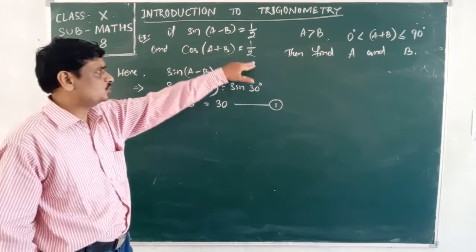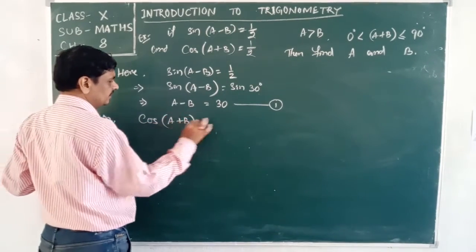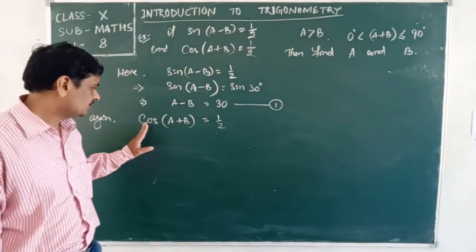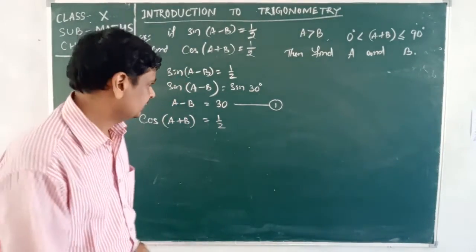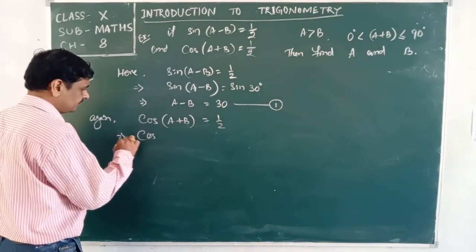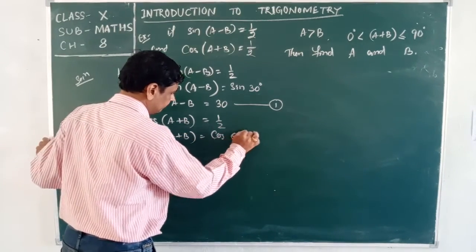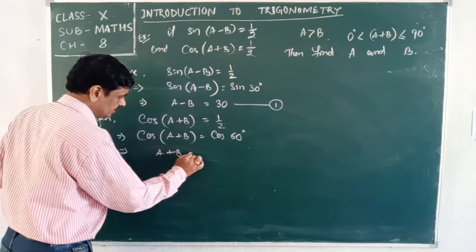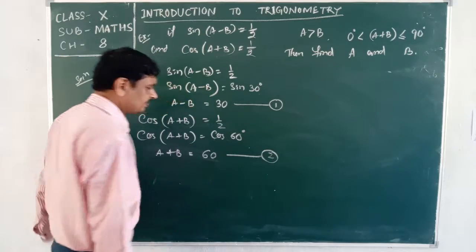From the second statement, cos(A + B) = 1/2. We know cos 60° = 1/2, so cos(A + B) = cos 60°, which implies A + B = 60°. This is equation 2.